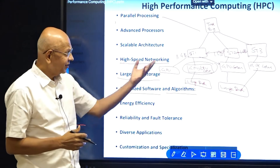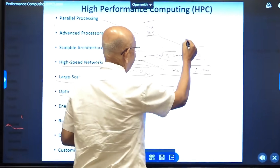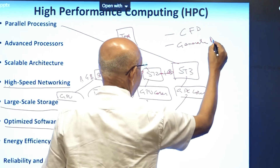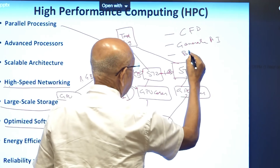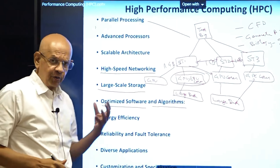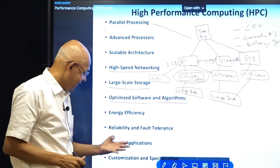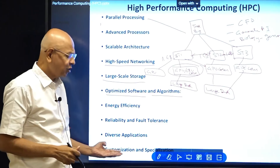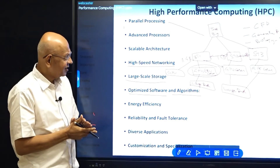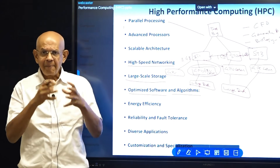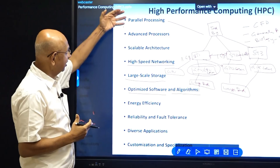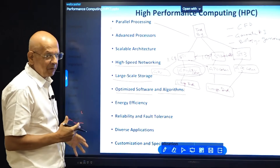Today, high performance computing is used for several diverse applications, ranging from computational fluid dynamics to generative AI based applications, to applications in biology and genomics. Many of these applications need a huge amount of parallel computing. There is also lot of scope for customization because it is rarely one size fits all — the GPU cores might have to be customized, sometimes the application has to be customized, sometimes the architecture has to be customized. These are the features of high performance computing in a nutshell.